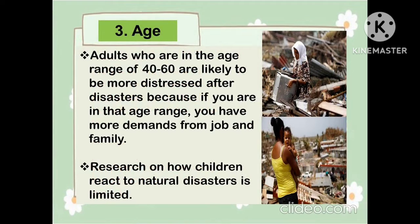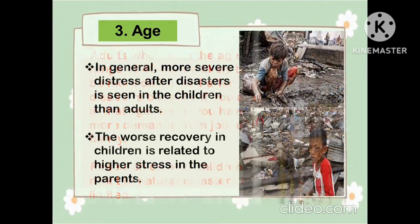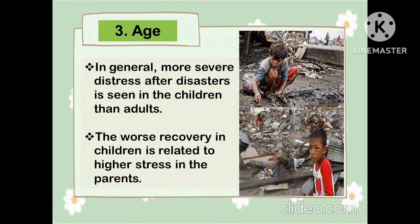Another factor underlying disaster is age. Adults in the range of 40 to 60 are likely to be more distressed after disasters, because at that age range they have more demands from job and family. Research on how children react to natural disasters is limited. In general, more severe distress after disasters is seen in children than adults. The worst recovery in children is related to higher stress in the parents.